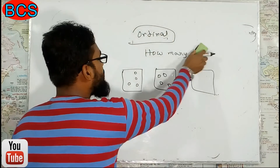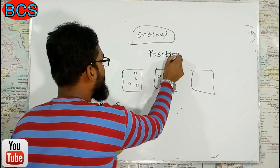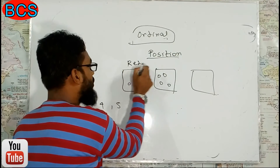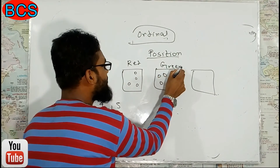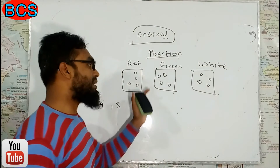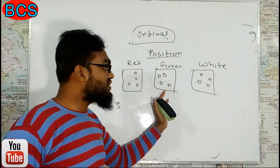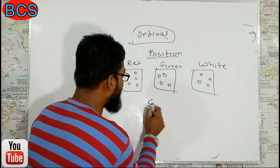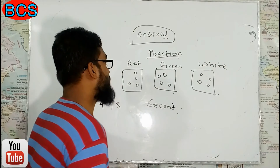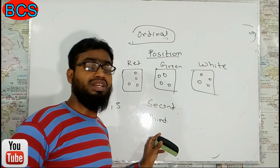One thing you should try to remember here is the position. Let us look at the position. This is the box — this is the red box, this is the green box, this is the white box. This is the second position. This is the order of the ordinal number. Cardinal number and ordinal number — and the third type is the multiplicative numeral number.